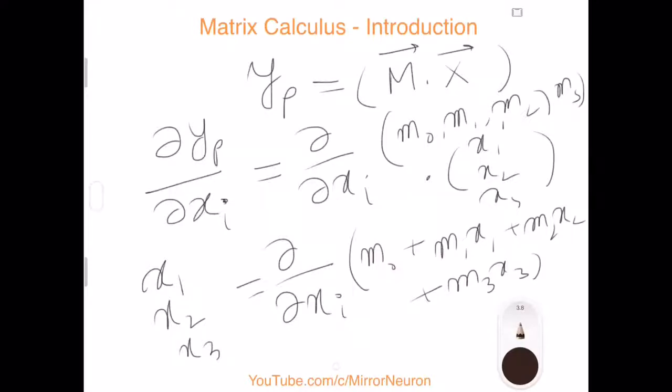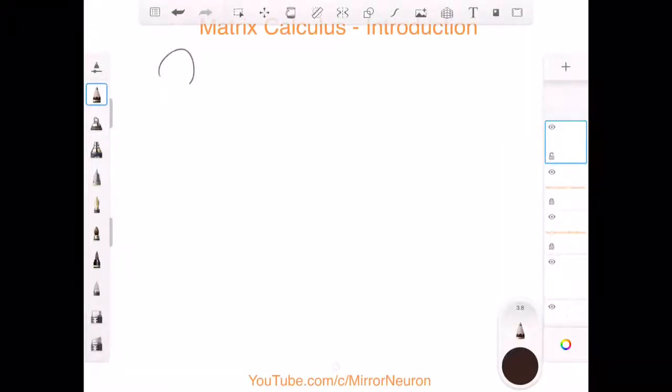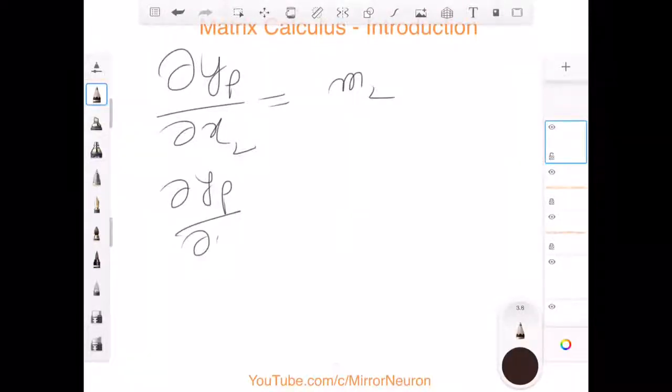It can be x1, so this will go to 0. And if i equals 1, then only this term stays, the others go away. So derivative with respect to dx1 will be equal to only m1. And similarly, derivative of yp with respect to dx2 will become m2.